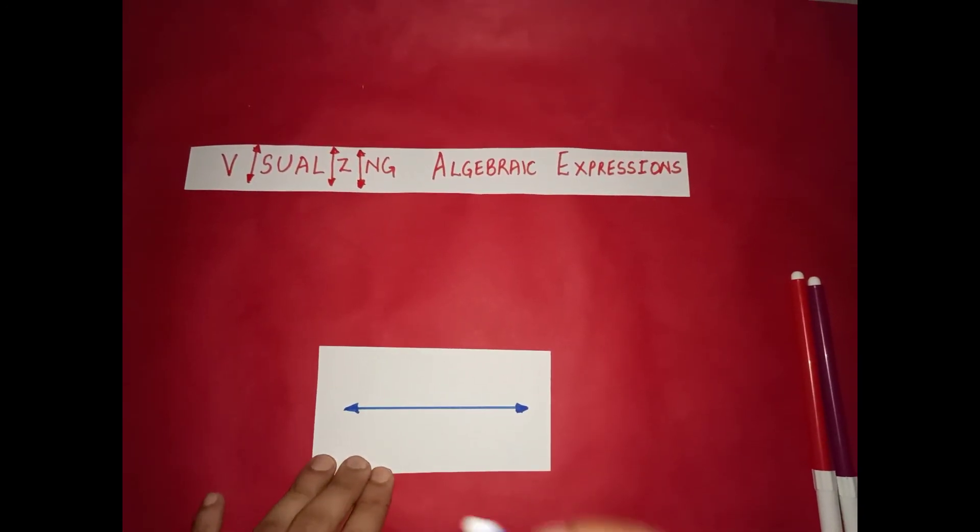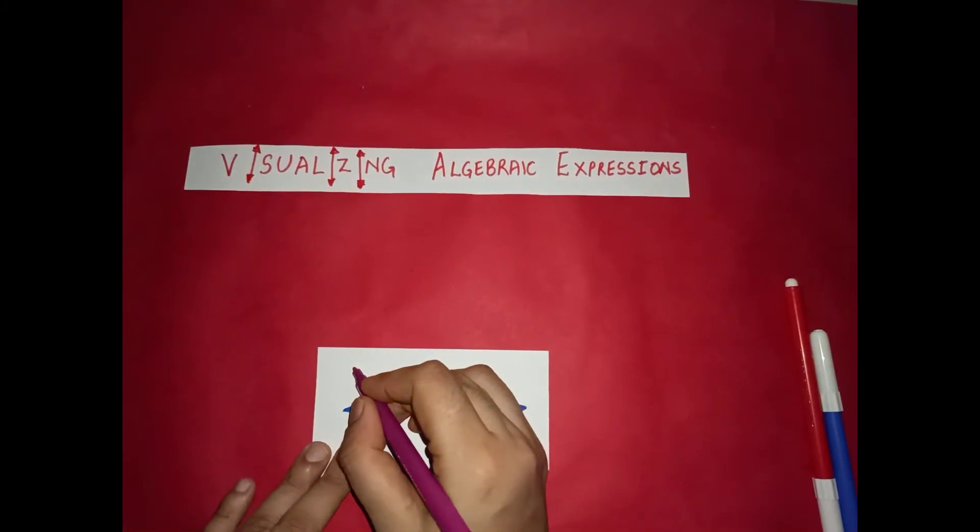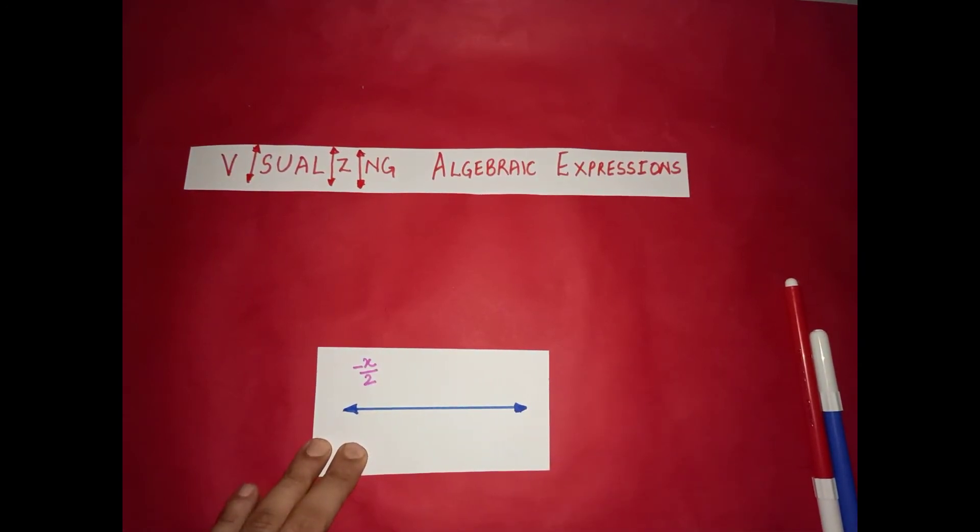Now let us represent negative x by 2. So now this expression again is half of x but now it is in the left side of 0. Negative x by 2. It is in the negative direction.